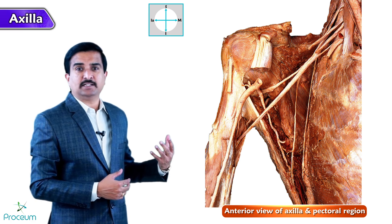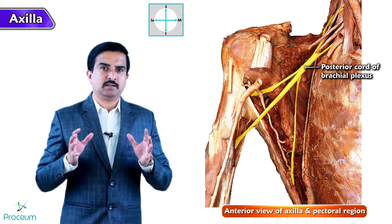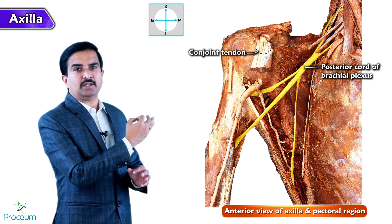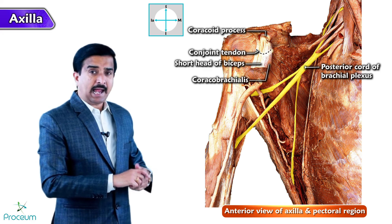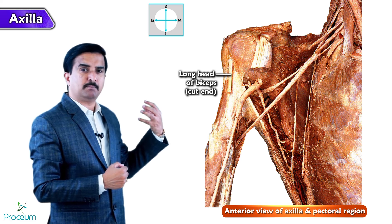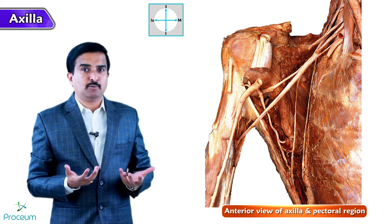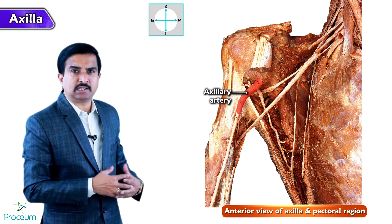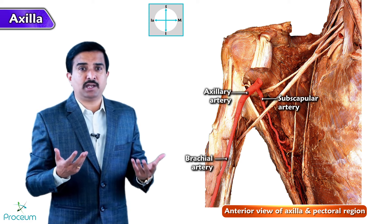Now let's identify the deeply situated posterior cord of the brachial plexus in this image. First, observe the cut end of the conjoined tendon formed by the coracobrachialis and the short head of the biceps arising from the coracoid process. The deltoid is completely removed and the cut ends of the long head of the biceps crossing the bicipital groove are made out. Laterally, the cut end of the terminal part of the axillary artery is clearly seen with one of its branches, the subscapular artery, and the axillary artery continues as the brachial artery in the arm.